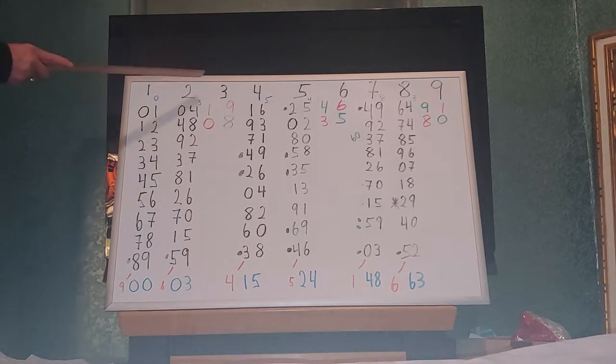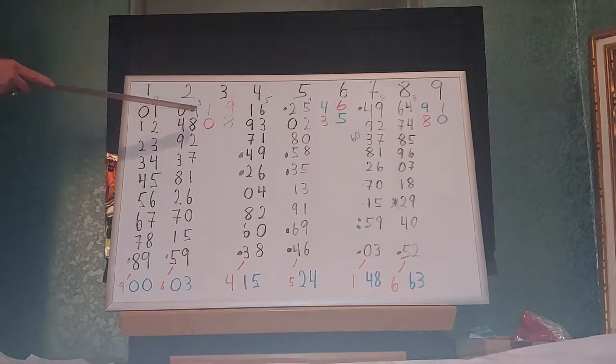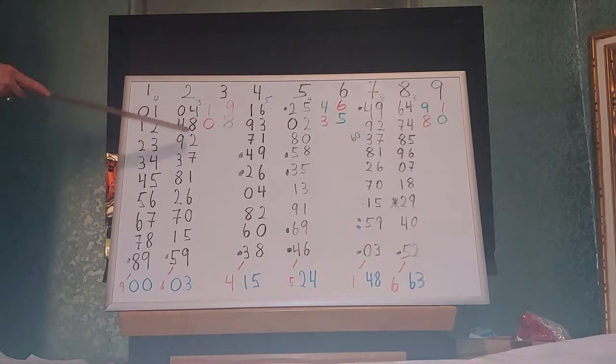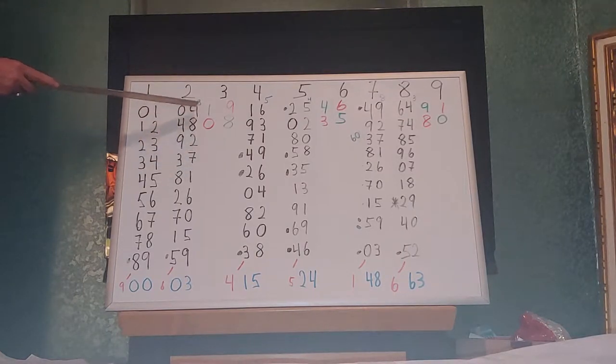Now we'll do 2. 2 squared is 4. 22 squared is 484. 222 squared is 49,284. Then it's going to go 4, 9, 3, 7, 2, 8, 4.